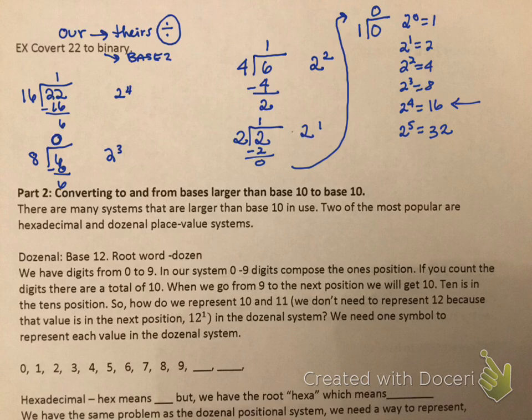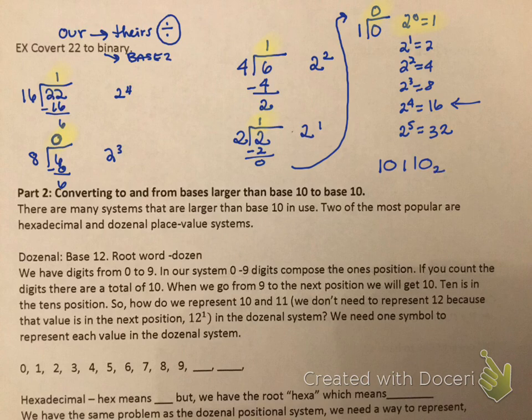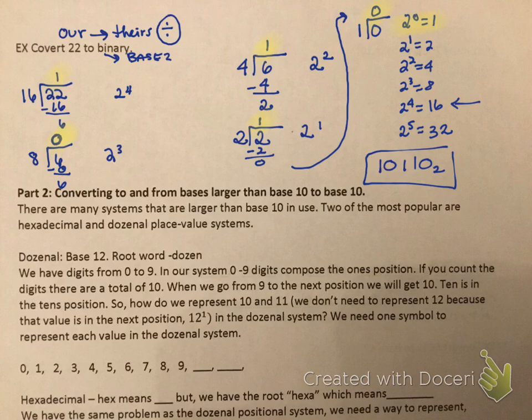So what's my value? I got a 1, a 0, a 1, a 1, and a 0 — reading from top to bottom that's 10110 base 2, which is binary. You can check your answers by converting back to our base to make sure you got the right answer. That's the end of part 1's video. Please make sure you watch part 2 to get the rest of this, which covers converting to and from bases larger than base 10.